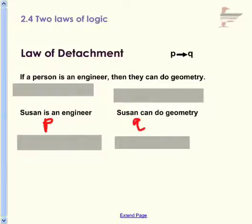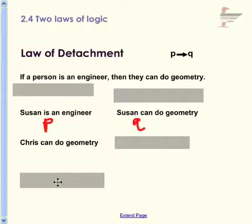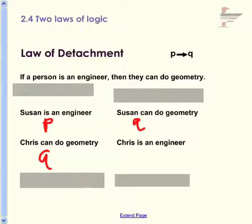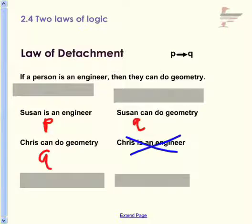In the next situation, we have that Chris can do geometry. Can we conclude that Chris is an engineer? What we have in this case for Chris can do geometry is we have Q. Do we know anything about if Q, then something? No, we don't. We only know if P — if a person is an engineer, then they can do geometry. We don't know about if a person can do geometry. So we cannot conclude that Chris is an engineer.